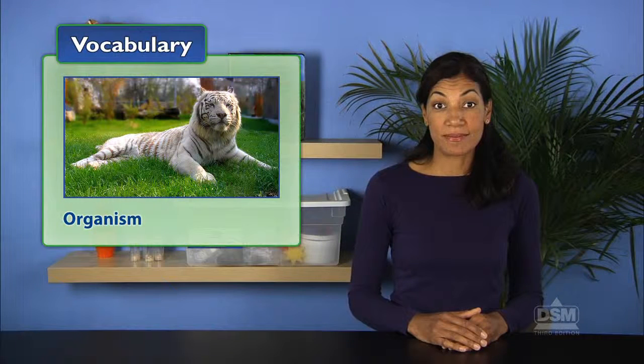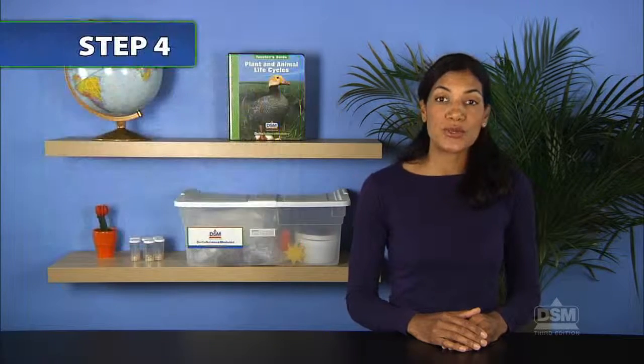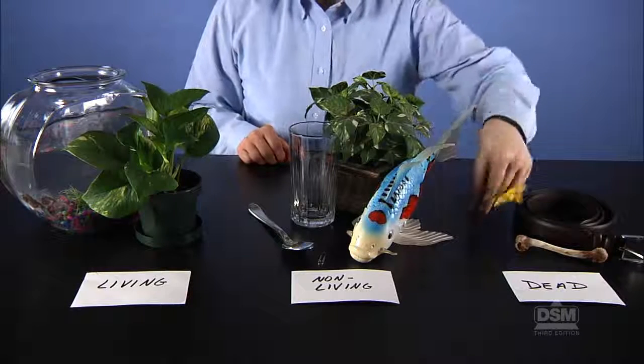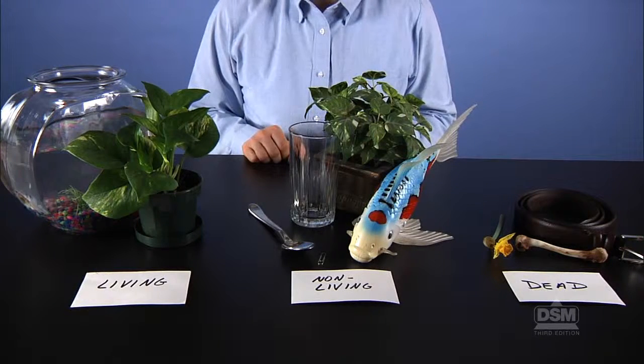Then have the students name different organisms. They may mention various animals and plants. Work with the students to sort and move all the other materials on the table, discussing each one as an example of a living, nonliving, or dead thing.